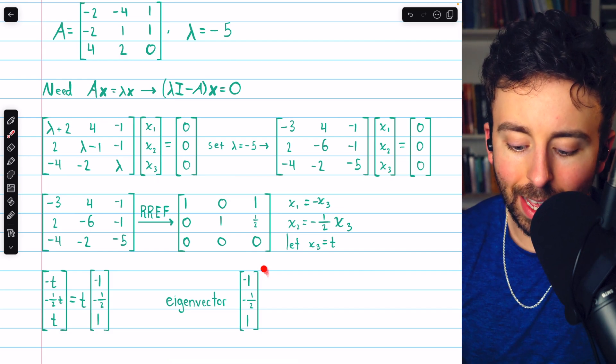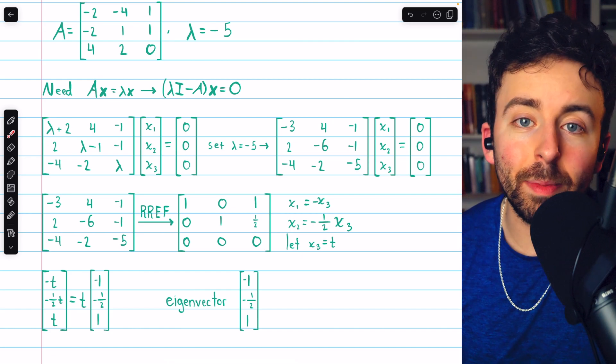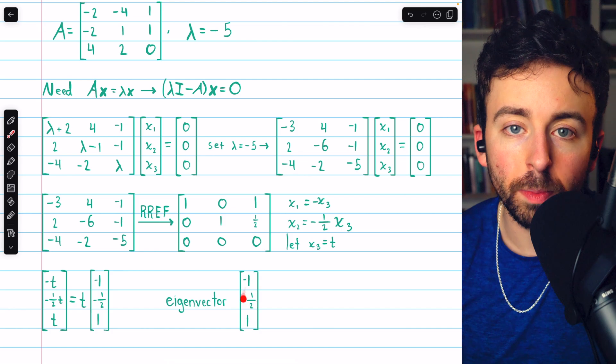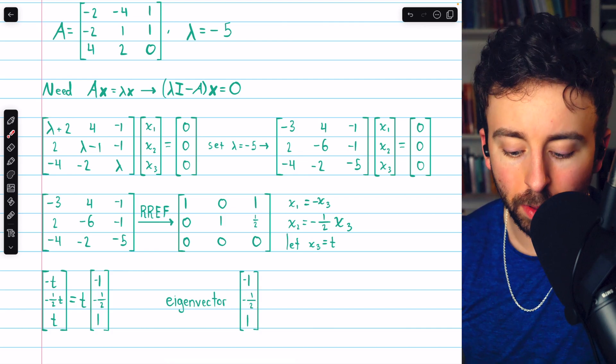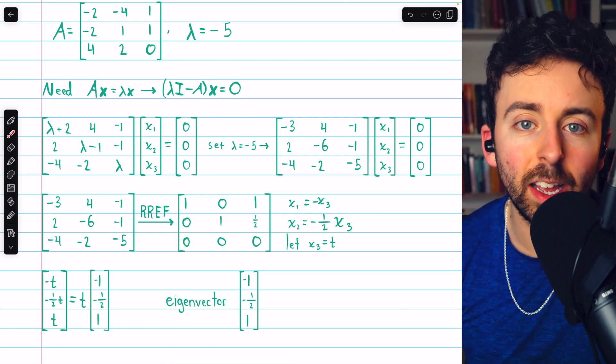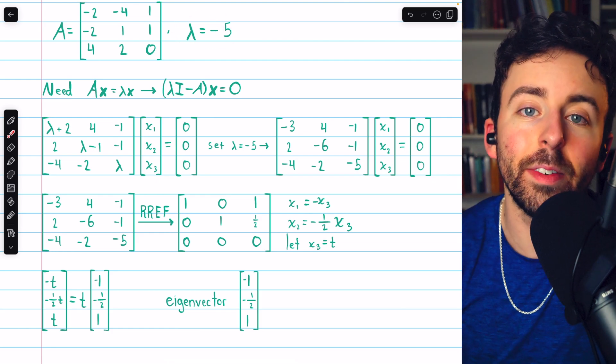And again, if you put this in a calculator, you would get a single vector like this as the eigenvector. And that means any non-zero scalar multiple of this eigenvector would be another eigenvector. This vector forms a basis for, it spans, what we call the eigenspace, corresponding to this given eigenvalue.